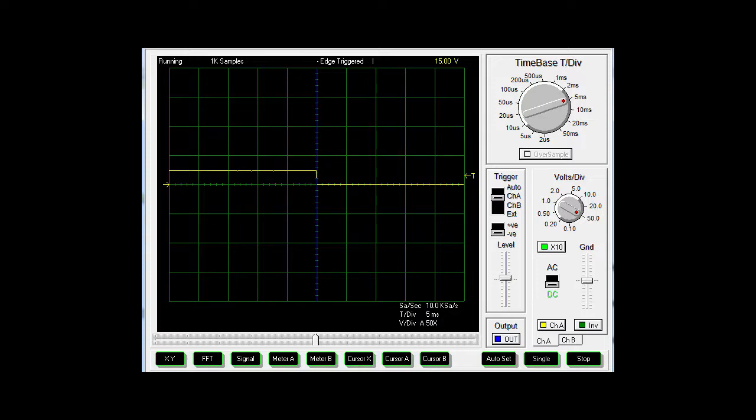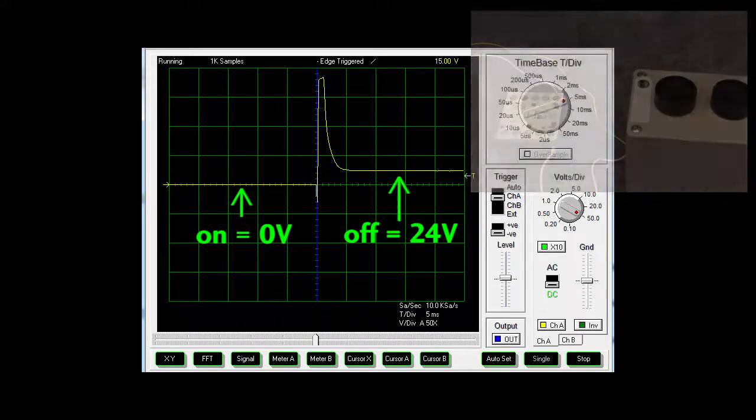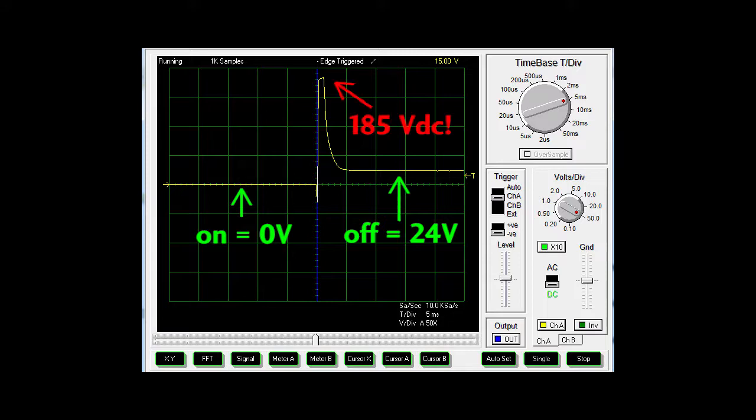Now that the current is flowing and a magnetic field is established in the contactor's coil, what happens when we release the switch? Look at that. The voltage spiked up to almost 200 volts.